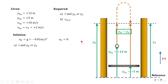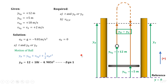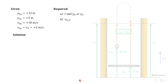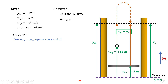Let's start the analysis with the motion of the ball. Using the third kinematic formula, we can express the final position of the ball in terms of time. Let's denote that as equation one. Next, let's analyze the motion of the elevator. Using the first kinematic formula, we can also express the final position of the elevator in terms of time. And let's denote this equation as equation two.